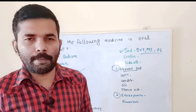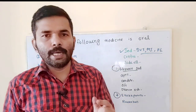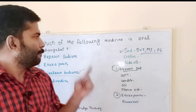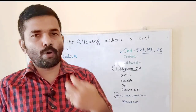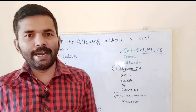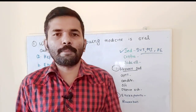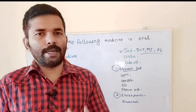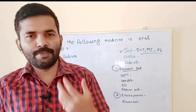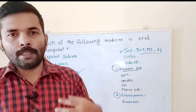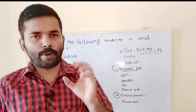In disseminated intravascular coagulation (DIC), we use anticoagulant therapy. In DIC, blood clots form all over the body causing massive bleeding. Other indications include DVT, deep vein thrombosis, myocardial infarction, atrial fibrillation, and pulmonary embolism. Blood clots in the coronary artery can cause myocardial damage and sudden death.